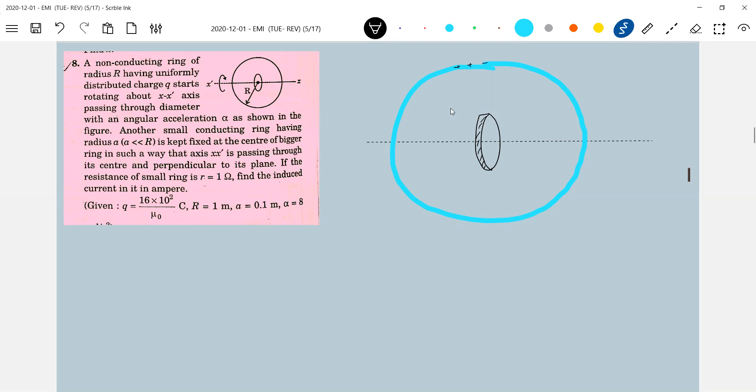Then this having a charge, it is being rotated. How this charged conducting ring rotates? Will it produce magnetic field? Yes, it will produce magnetic field.